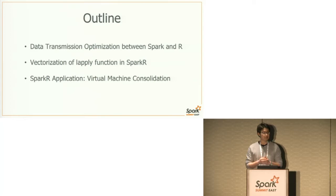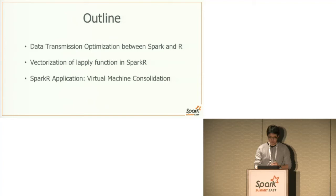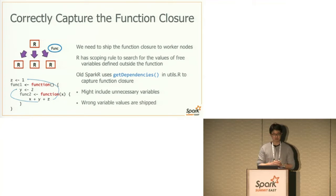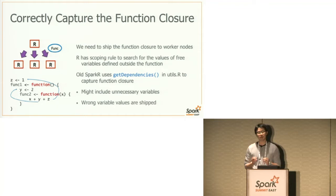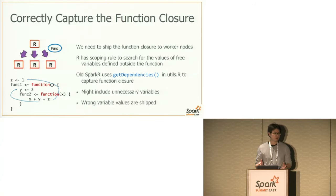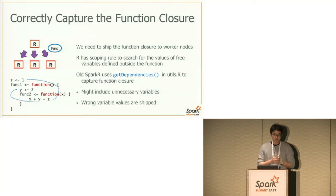What I'm going to talk about today is our work to make SparkR a better project — better performance and more functionality. The first two topics are more on the engineering side, and the last introduces a SparkR application we're using. The first thing I want to talk about is how we correctly capture a function closure. How SparkR works is the R process on the master node distributes the user's function to different worker nodes so that the function will be evaluated in parallel.